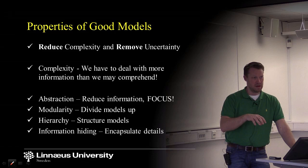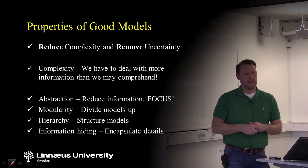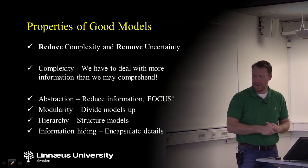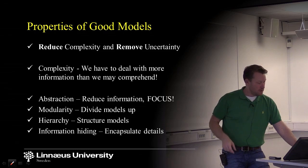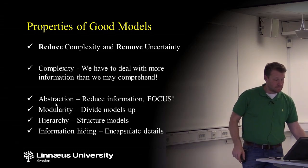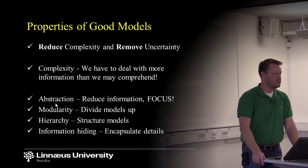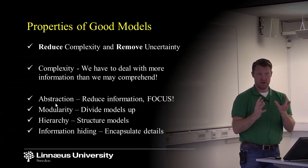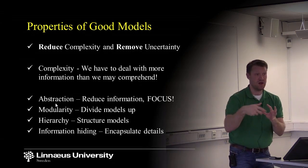By making your assumptions explicit, you know the decisions, so you don't have that uncertainty anymore. Good models typically use four properties: abstraction, modularity, hierarchy, and information hiding. A good model creates abstractions — we reduce information, we describe some entity with a reduced description, removing information that is not relevant in a particular context.